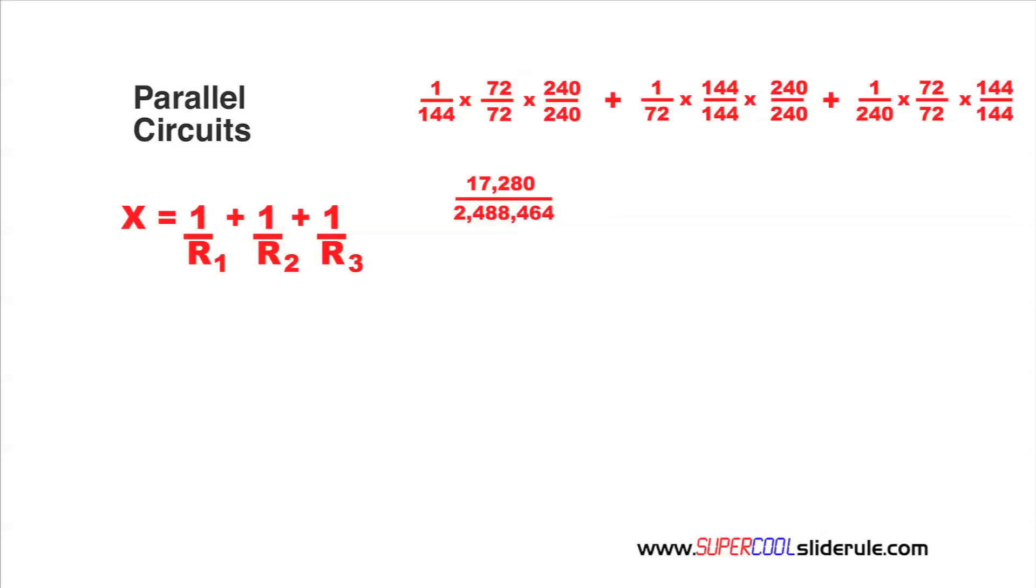Multiplying 72 by 240 gives us 17,280. Multiplying 144 by 240 gives us 34,560. And finally, multiplying 72 by 144 gives us 10,368.